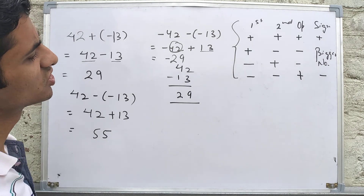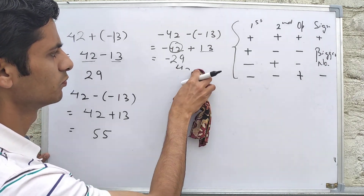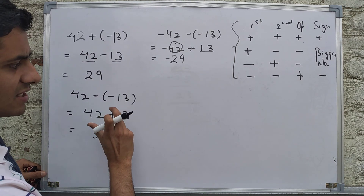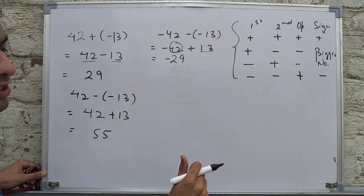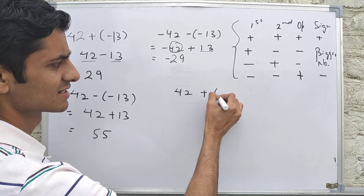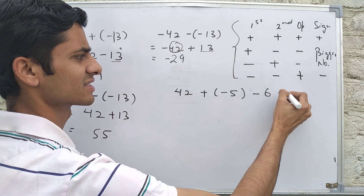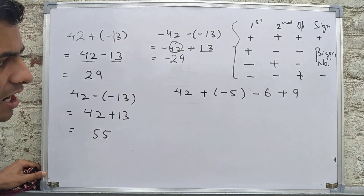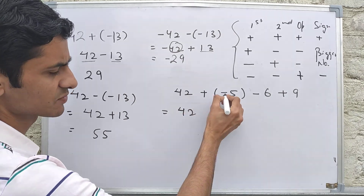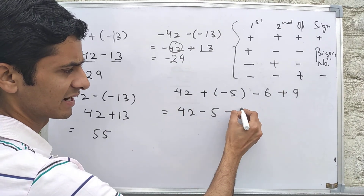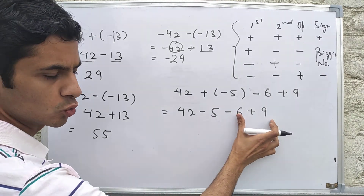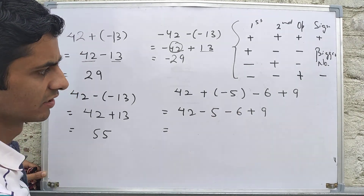Now let's take an example with more than two numbers: 42 + (-5) - 6 + 9. First, open all the brackets. Plus minus becomes minus, so it becomes 42 - 5 - 6 + 9. Now solve taking two numbers at a time.